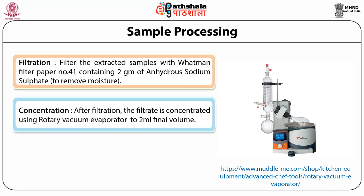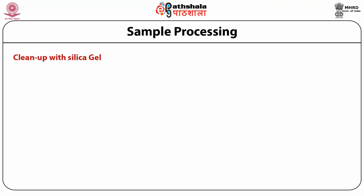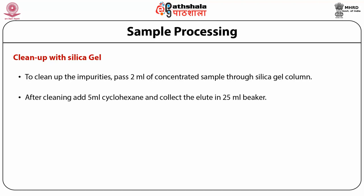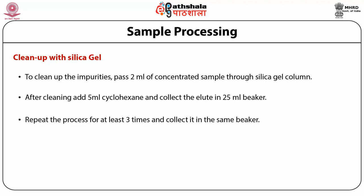After filtration, the filtrate is concentrated using a rotary vacuum evaporator to 2 ml final volume. The cleanup process is then carried out using silica gel. Pass 2 ml of concentrated sample through the silica gel column. After cleaning, add 5 ml of cyclohexane and collect the eluate in a 25 ml beaker. Repeat the process at least 3 times and collect in the same beaker. Alternatively, solid phase extraction may be used for cleanup.